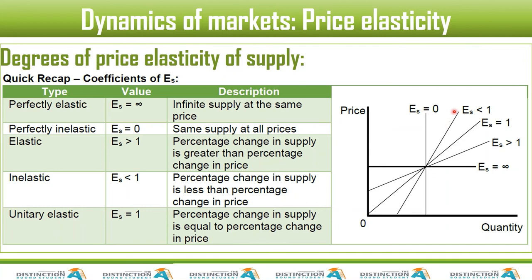This here is inelastic, this here is elastic, and this is perfectly elastic. Perfectly elastic goes next to this, and unitary is right in between them. This is one of the easiest topics you'll ever do in economics.